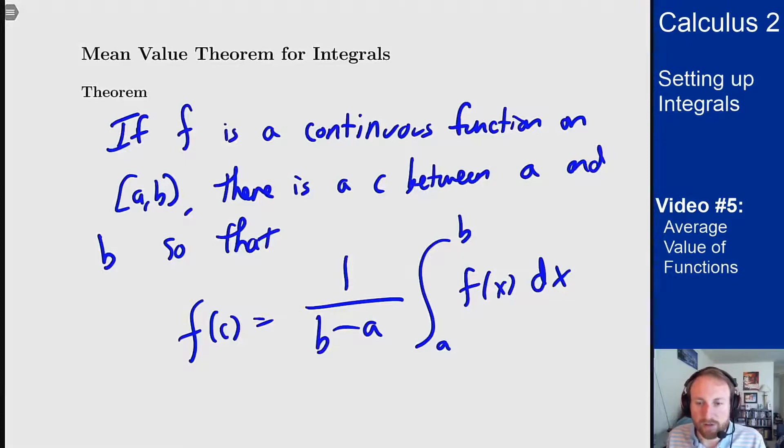One is sort of via the intermediate value theorem. So this average value should be the average height of the function, right? And if the function is continuous, the average height has to be somewhere sort of where the function gets to, right? So if the average height doesn't get hit, then the function had to jump over it, had it not be continuous.